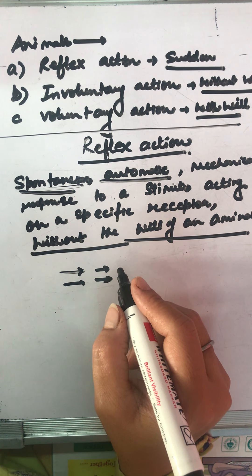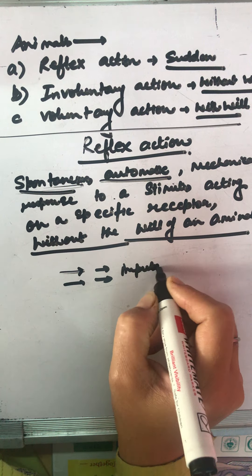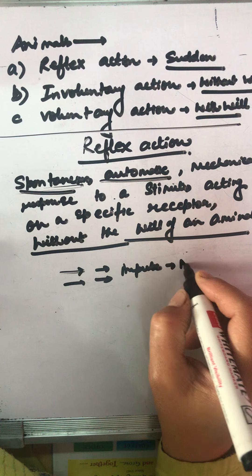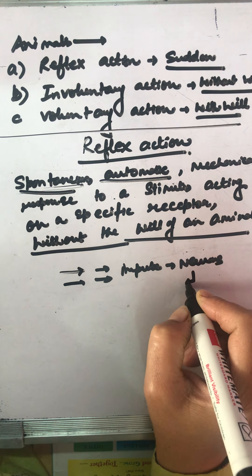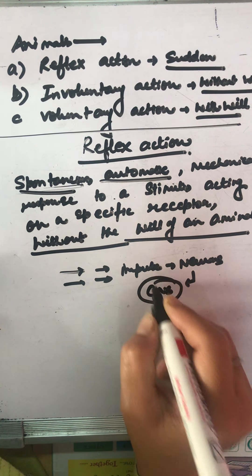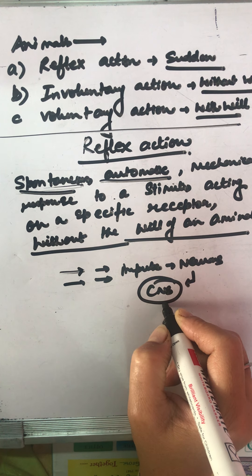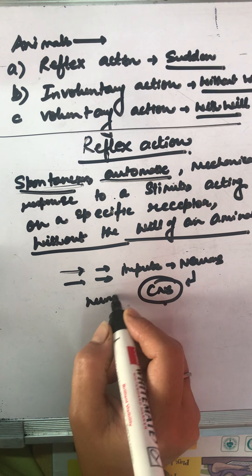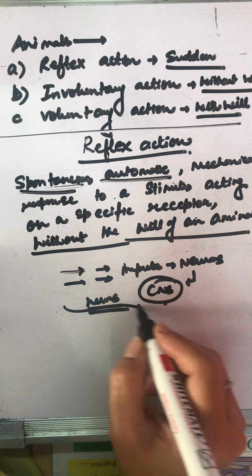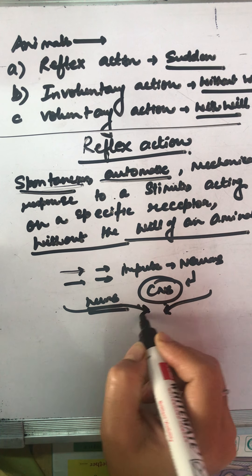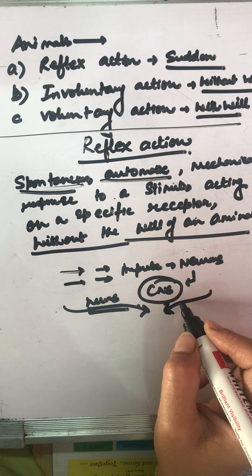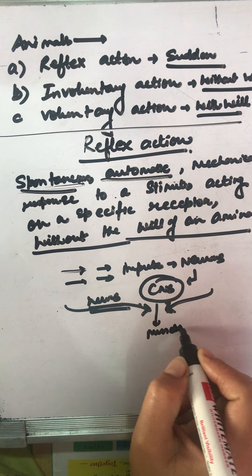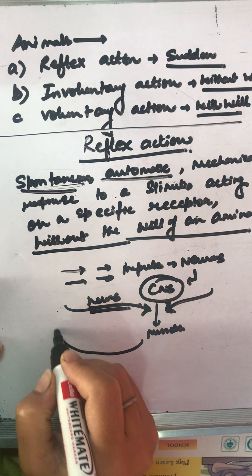This impulse will go to neurons. These neurons will automatically take it to the central nervous system where the brain lies. Brain involves all the nerves from various parts of the body. Then brain is instructing our muscles to move, and these nerves will carry the signals back.